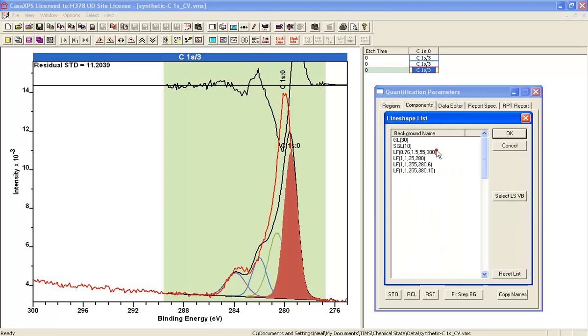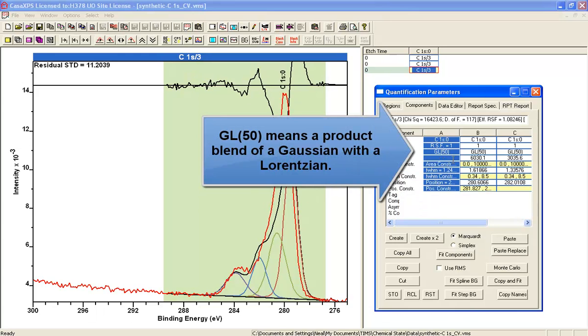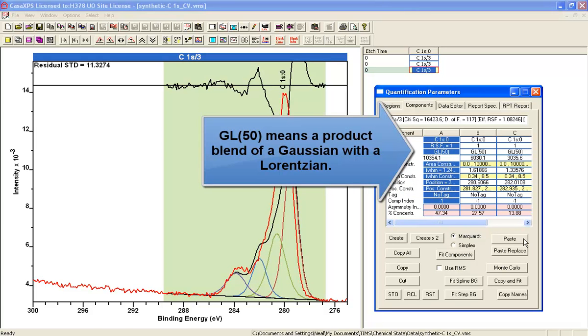It's not completely different, it's a blend of a Lorentzian and a Gaussian, which is what an LF line shape is. The LF line shape is actually a convolution of a Lorentzian and a Gaussian. This one is a mathematical functional form.